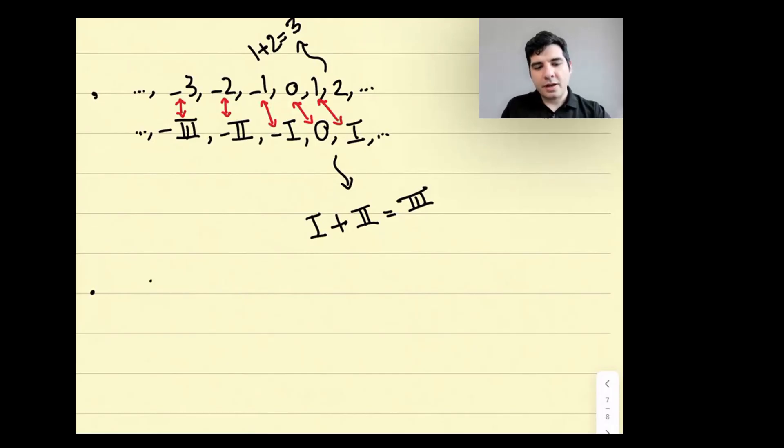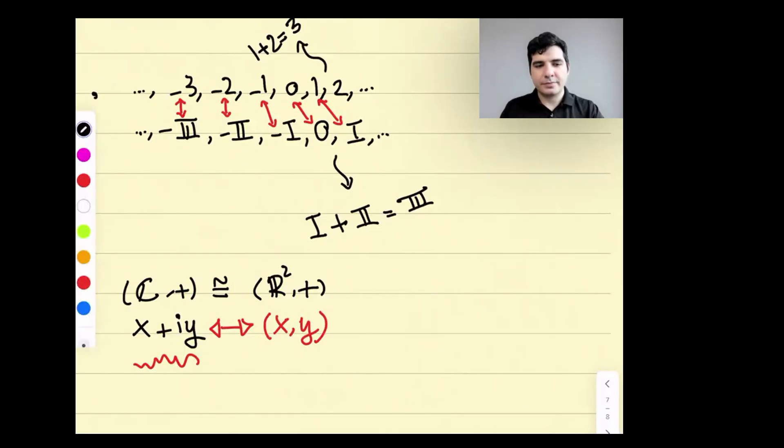The essential point is that the set of complex numbers with addition is essentially the same as R² with addition, if we just consider them as sets equipped with this addition structure. How does that work? A complex number is of the form x plus yi. Just like upstairs where we have a correspondence between numbers in two different languages, here we can say x plus iy is another way of saying the pair (x, y) in R². That is the correspondence between these two sets. And it also preserves the addition. If I have two complex numbers and look at their sum as complex numbers or think about them as pairs and look at their sum as pairs in R², we get the same thing. So they are the same as groups. The technical word for that is that they are isomorphic as groups.